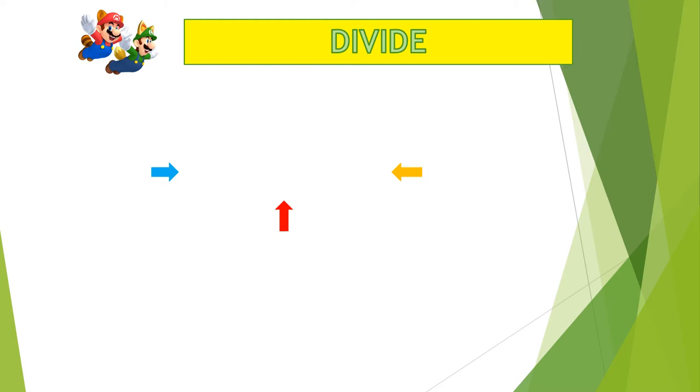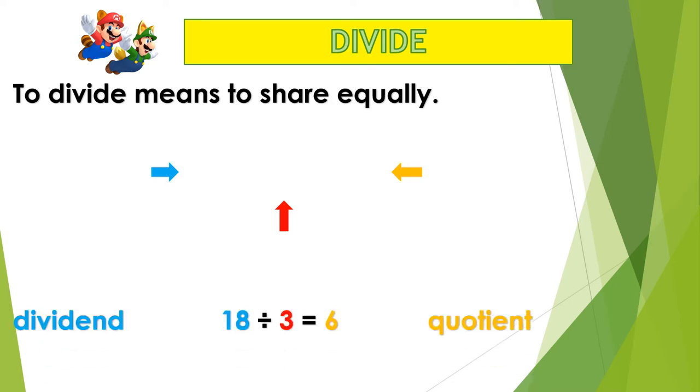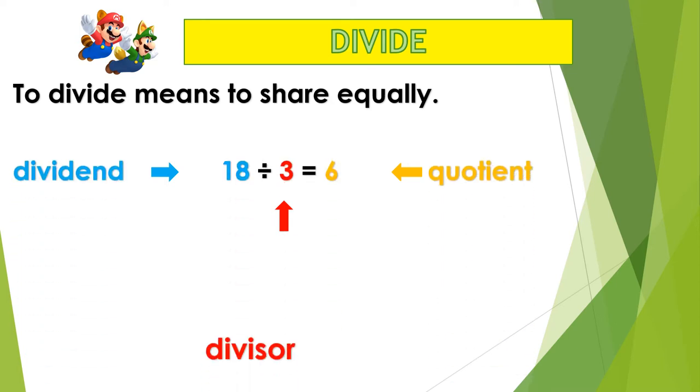Let's look at what it means to divide. To divide means to share equally. Now let's look at the sum so that we can understand the operation of division better. 18 divided by 3 is equal to 6. Pay attention to the shape of the division sign.